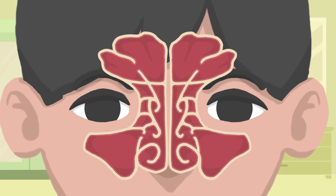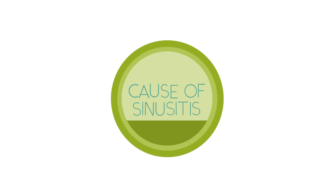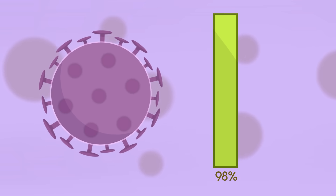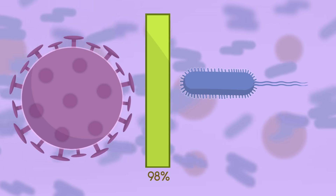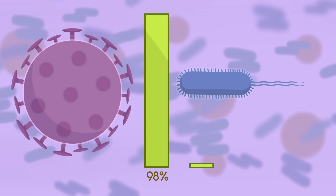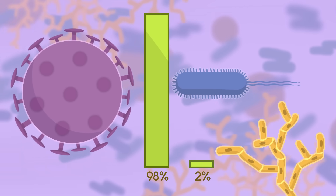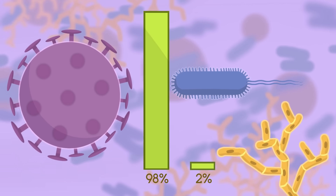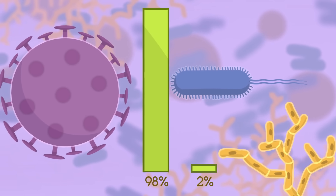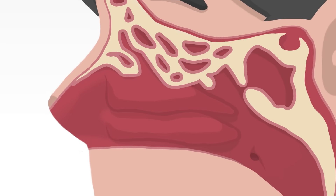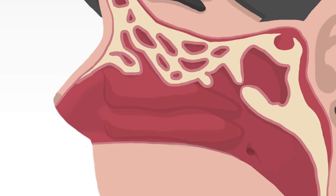Sinusitis means your sinuses are inflamed. What causes sinusitis? 98% of sinusitis cases occur due to viral infection. It can also be caused by bacterial infection, while a small population can have it due to fungal disease. There are some predisposing factors that make it more likely that you get sinusitis, including allergic rhinitis, which makes it easier for infection to occur.